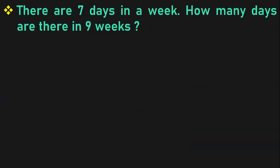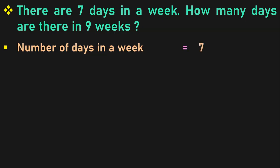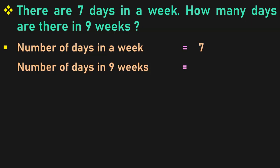Let us do the next sum now. There are 7 days in a week. How many days are there in 9 weeks? Let us first write down the statements. Number of days in a week is equal to 7. What do we have to find? Number of days in 9 weeks. If there is 1 week — 7 days, then in 9 weeks it will be 9 into 7. As children are familiar with the 7 or 9 tables, they can write down the answer directly: 9 into 7 is 63.